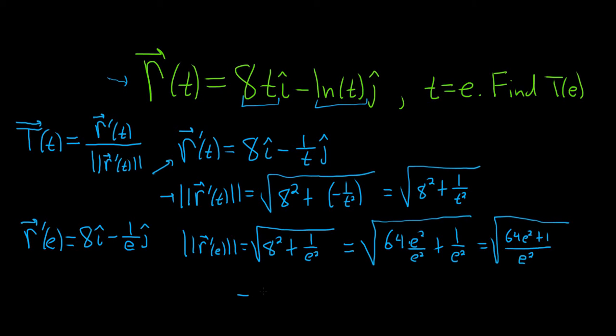Then you can simply take the square root of the top and the bottom. So you'll get 64 e squared plus 1, and on the bottom, when you take the square root of e squared, you just get e.